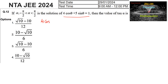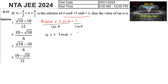It is given that 4cosθ + 5sinθ = 1. Dividing both sides by cosθ, we get 4 + 5tanθ = secθ. Now squaring both sides.